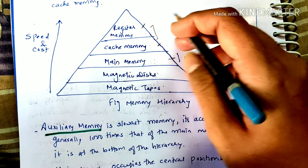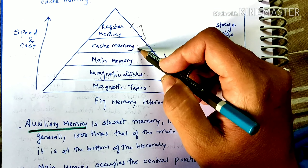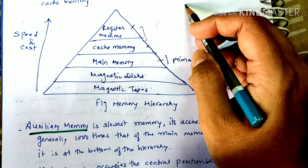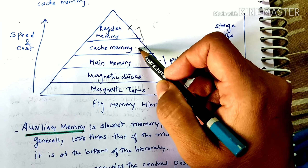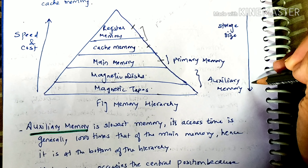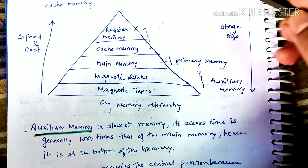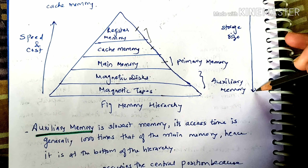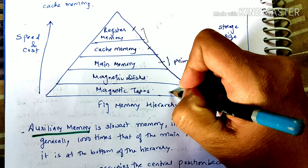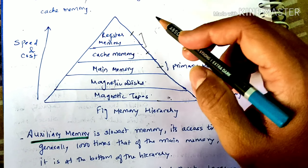For faster memory like registers and cache, the cost is higher — the faster the speed you want, the more the cost. As you go downward in the hierarchy, speed and cost decrease, but storage size increases. So lower levels have higher capacity, lower cost, and lower speed.